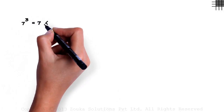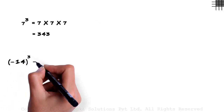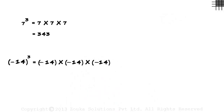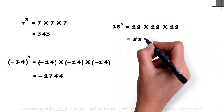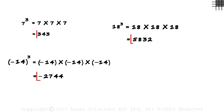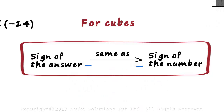Now there's a vital property we need to understand. Here are a few examples. How do we find the value of 7 cubed? It is 7 multiplied by 7 multiplied by 7, and that equals 343. Minus 14 whole cubed equals minus 14 multiplied by minus 14 multiplied by minus 14, which equals minus 2744. And similarly, 18 cubed equals 18 multiplied by 18 multiplied by 18, which equals 5832. Observe the sign of the number and the sign of the answer — if negative, then negative; if positive, then positive. So for cubes of numbers, the sign of the answer is the same as the sign of the number: the cube of a negative number results in a negative number, and the cube of a positive number results in a positive number.